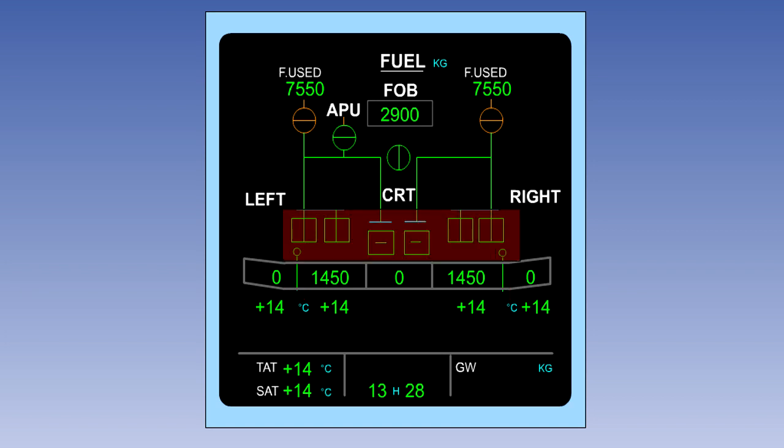These symbols are used to depict the fuel booster pumps. The line in the box is vertical when the pump is operating, as seen on the wing tank pump indications. And horizontal when the pump is switched off, as demonstrated by the center tank pump indications.